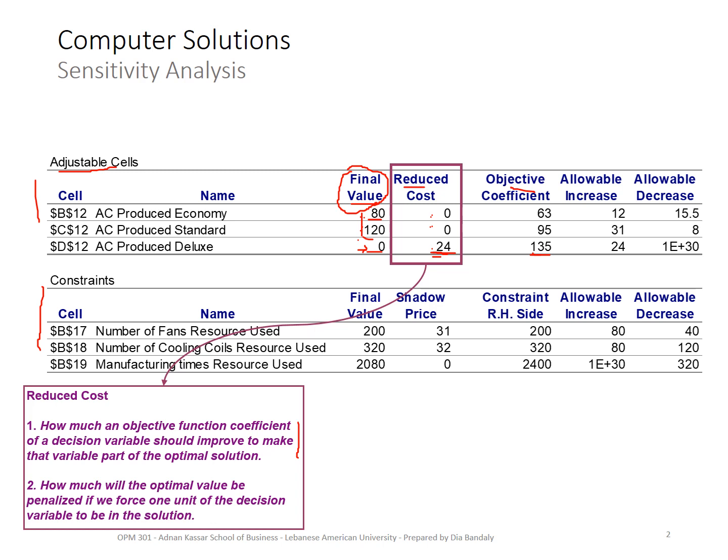The other one is this: sometimes you don't want to change that, you cannot change it for many reasons, but you want to enforce, you want to force this decision or this product to be part of solution. You can do that, of course, but you can now make sure that with forcing one unit of this decision variable that was not part of solution into your solution, you'll be losing $24. So this is the second definition of a reduced cost. It's how much you are penalizing your optimal value by forcing one unit to be part of your solution. And this is linear. So if you force 10 of these, you'll be penalized by $240.